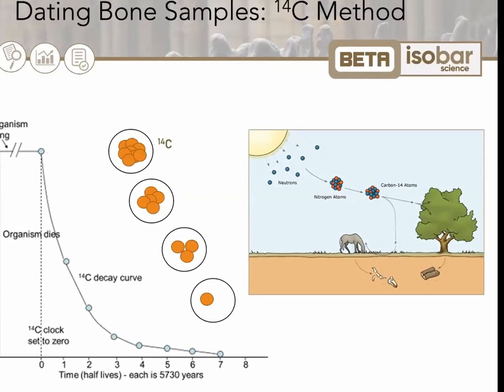During its life, a terrestrial plant or animal is in equilibrium with its surroundings by exchanging carbon either with the atmosphere or through its diet. It will therefore have the same proportion of 14C as the atmosphere during its life, or in the case of marine animals or plants, the same proportion of 14C with the ocean.